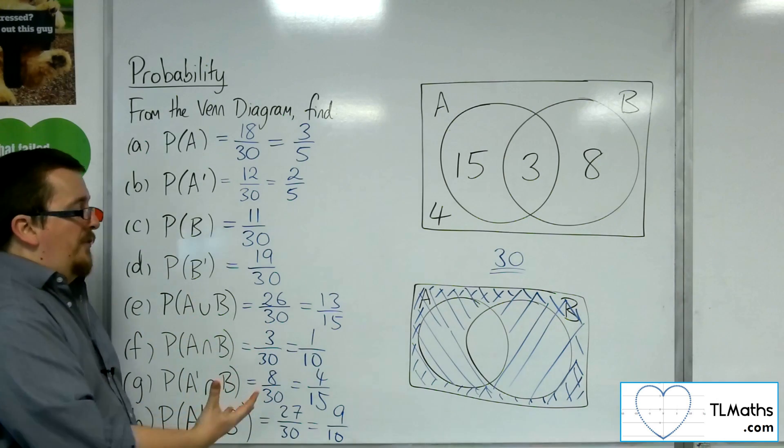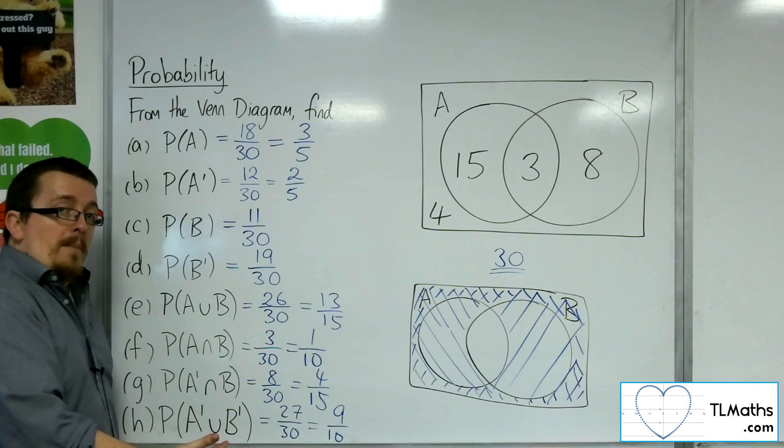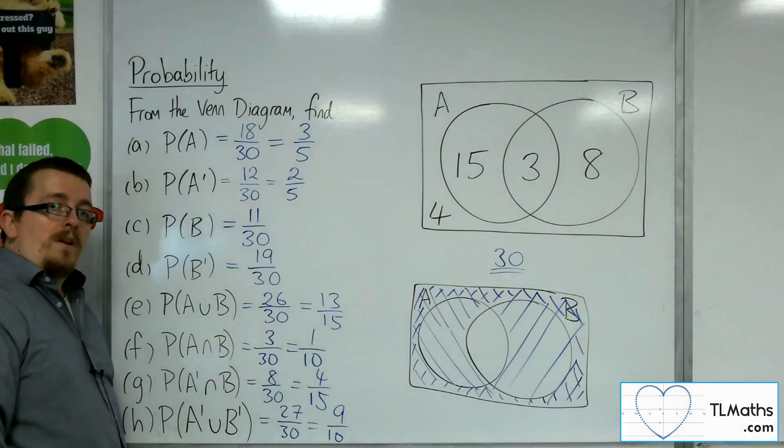And that's how we can find specific probabilities from a given Venn diagram. Thank you, everyone.